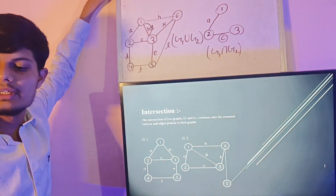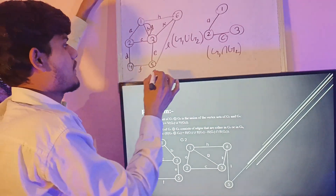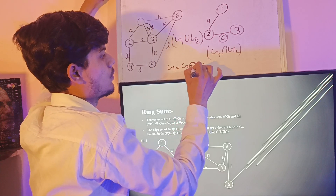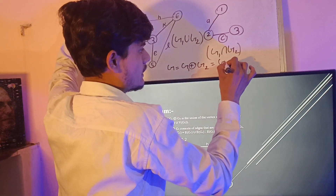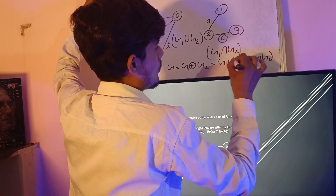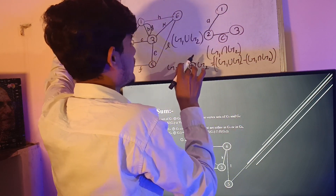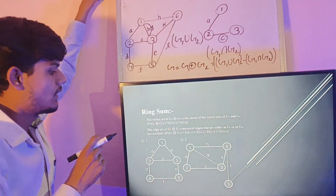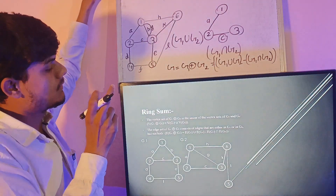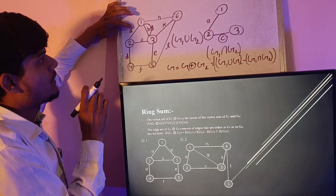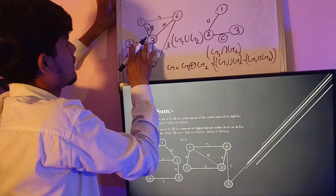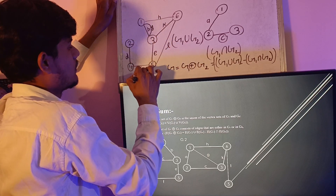Now let us move to our next topic called ring sum. The ring sum is denoted by G equal to G1 ring sum G2, which equals G1 union G2 minus G1 intersection G2. This is the formula to find the ring sum of G1 and G2. We subtract the intersection from the union — we remove the common edges A and C. This is the ring sum of these two graphs.